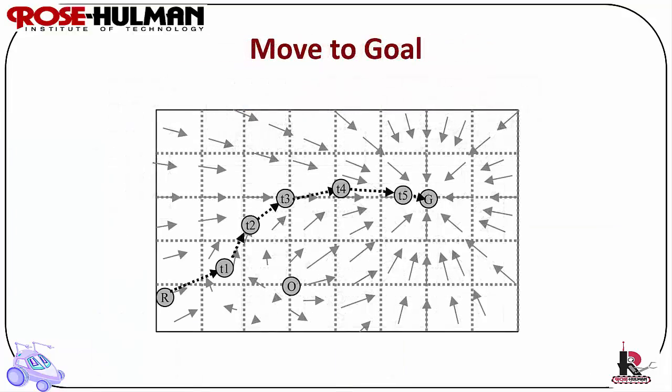Here's another example of using potential fields for robot navigation. If the robot starts at the given location, this is the path that it takes. The robot only feels the vector at the current location and then moves. The robot never computes the entire field of vectors — it only computes the local vector in order to move to goal while also avoiding an obstacle.